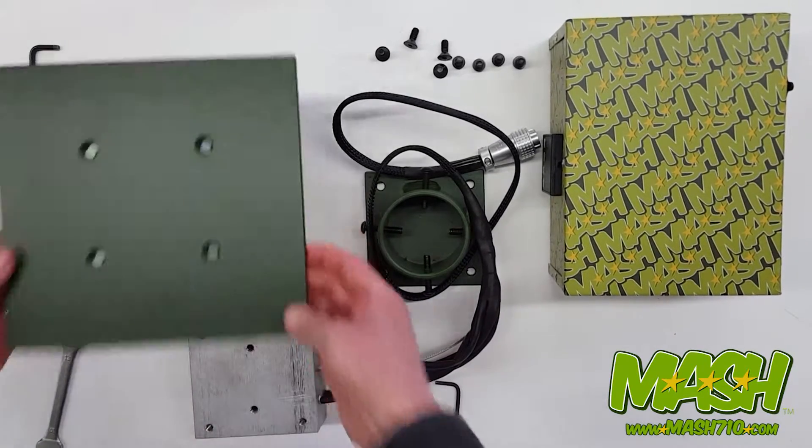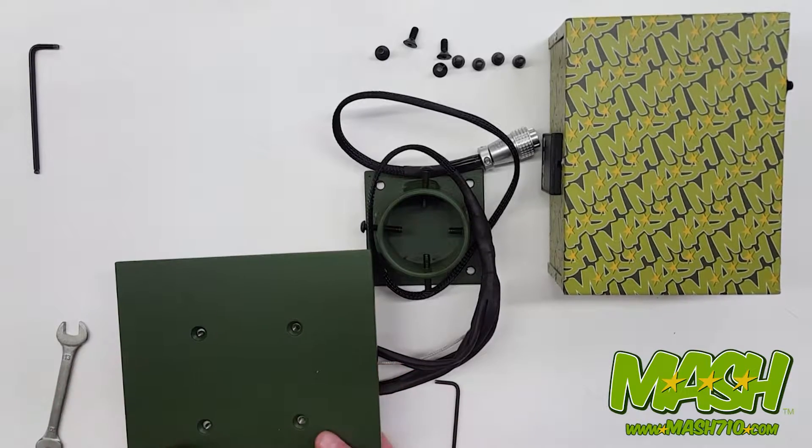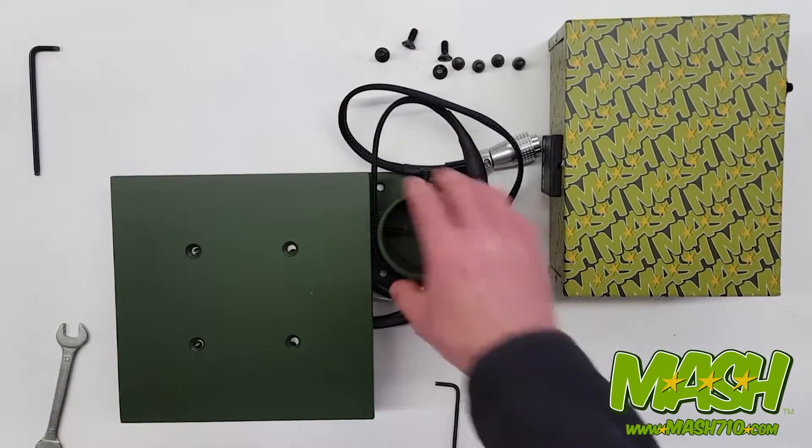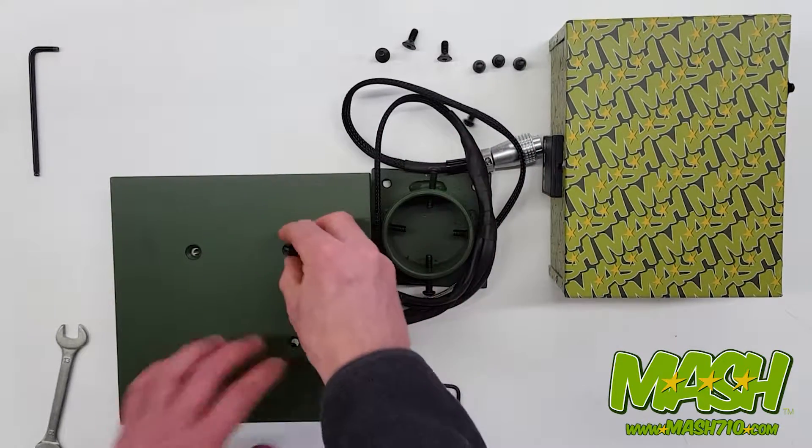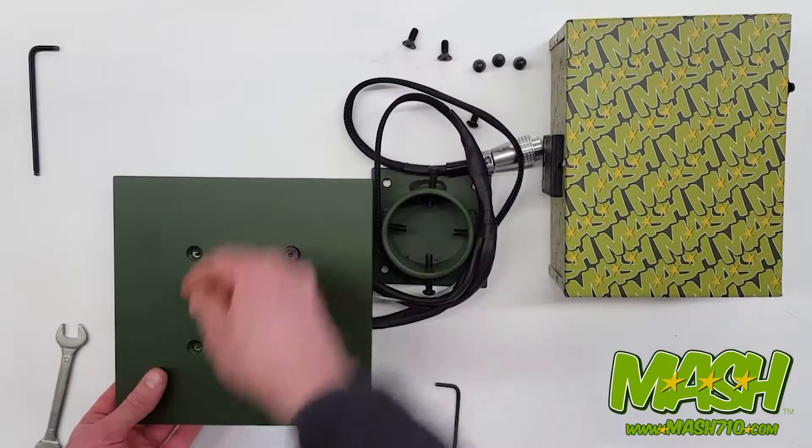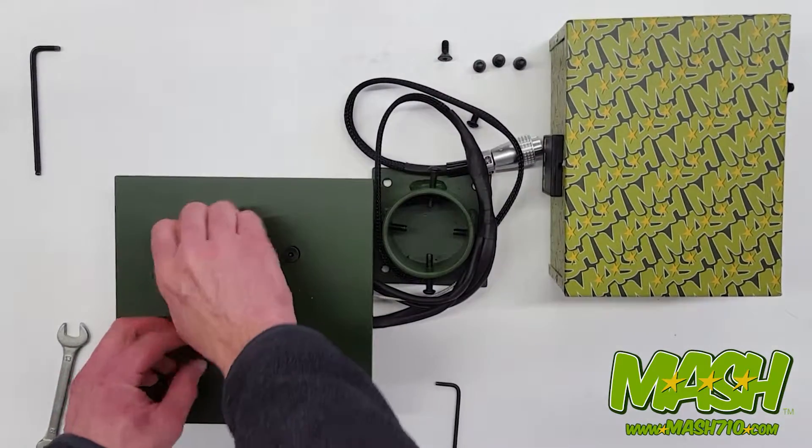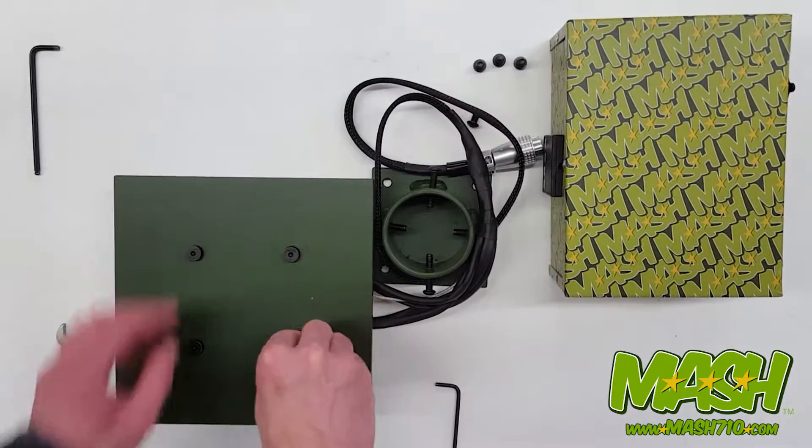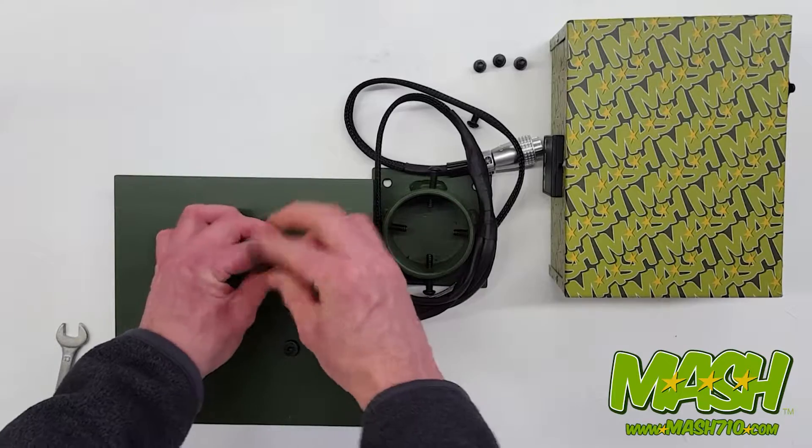And now with it still upside down, take your 8x8 base plate, place it on top. And using these tapered head screws, thread them in by hand at first, all four of them. And using a 5/32 hex wrench, insert.